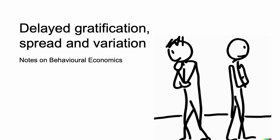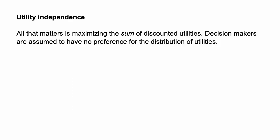Hi, this video is about delayed gratification, spread, and variation. Recall the assumption of utility independence. All that matters is maximizing the sum of discounted utilities. Decision makers are assumed to have no preference for the distribution of utilities.